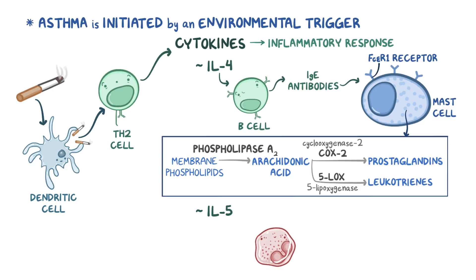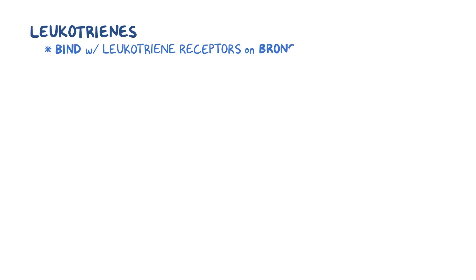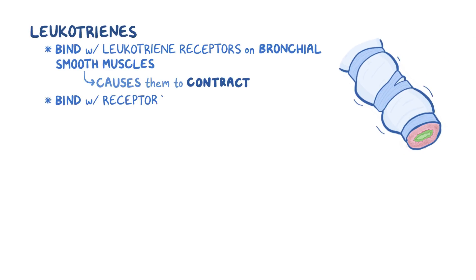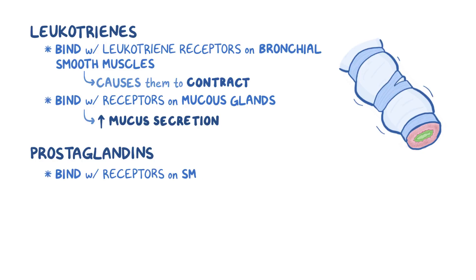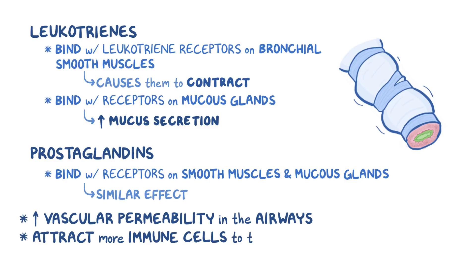IL-5, on the other hand, activates eosinophils, which promote an immune response by releasing more cytokines and leukotrienes. Leukotrienes bind with the leukotriene receptors on the bronchial smooth muscles and cause them to contract. They also bind to receptors on the mucous glands to increase mucous secretion. Similarly, prostaglandins also bind to their receptors in smooth muscles and mucous glands to cause a similar effect.